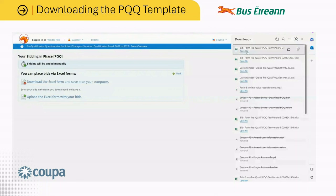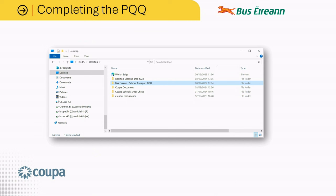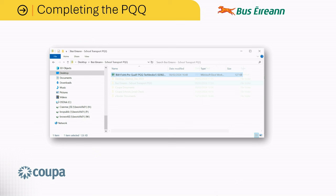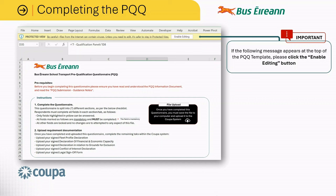Section 3: Completing the PQQ. Navigate to the relevant location on your computer or device where you have saved the file and double click on the file name to open. Upon opening the file, you may be presented with a message at the top of the PQQ template. If you receive this message, please click the enable editing button, as it is important that you do so, otherwise it may make it difficult to complete certain sections of the form.